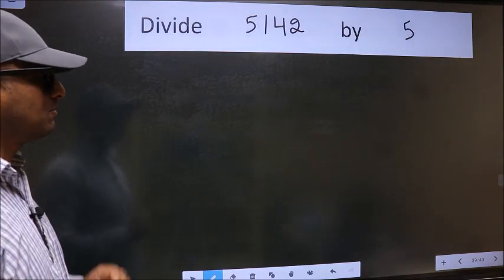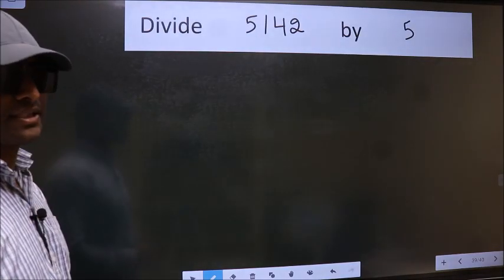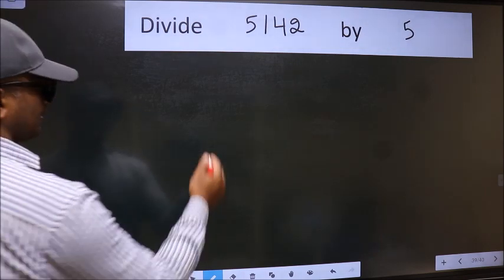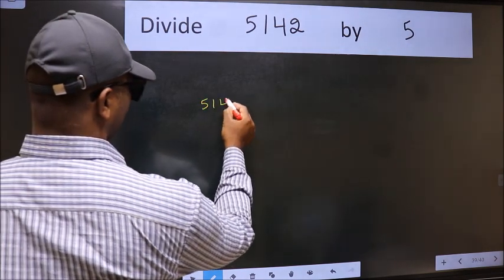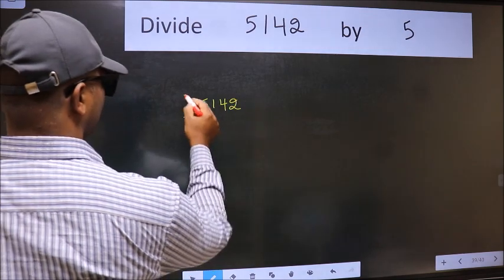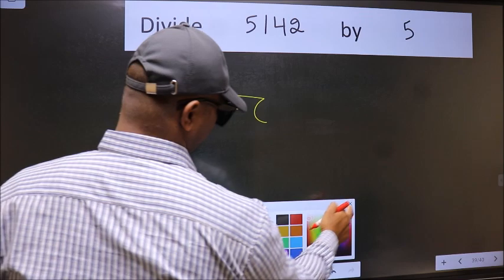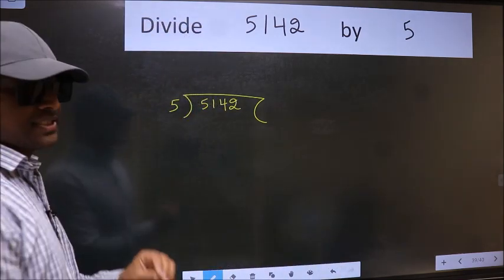Divide 5142 by 5. To do this division, we should frame it in this way: 5142 and 5 here. This is your step 1.